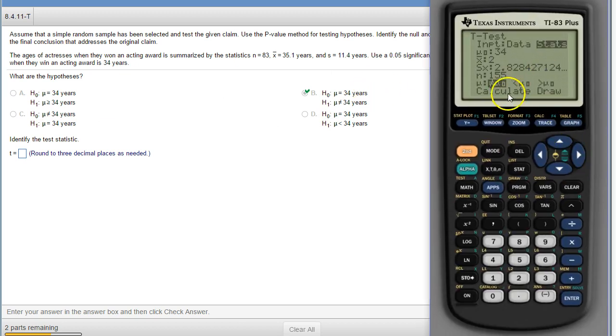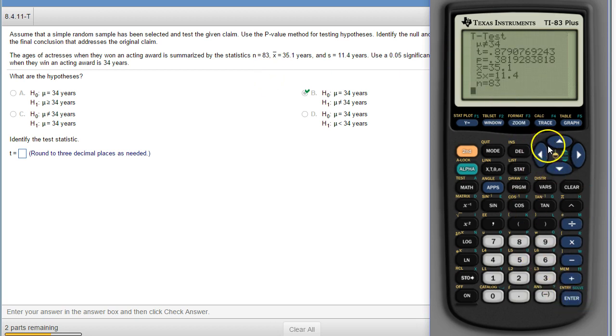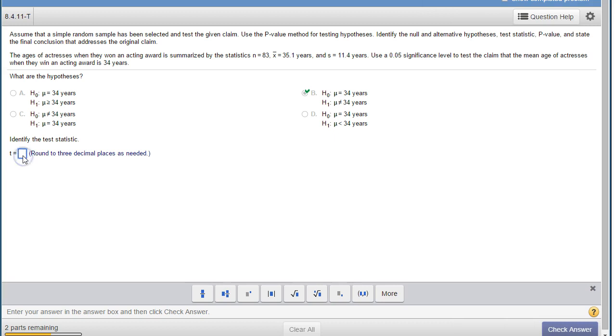So we're going to use the sample mean is 35.1. The sample standard deviation is 11.4. The sample size was 83. And this one's not equal to. So we do calculate. The very first thing that we see is the test statistic. So t equals, three places at .879.